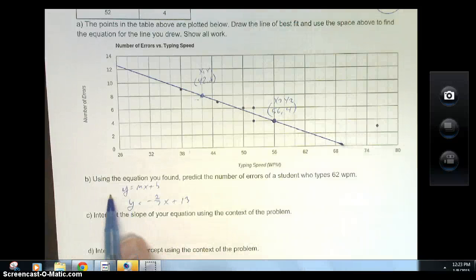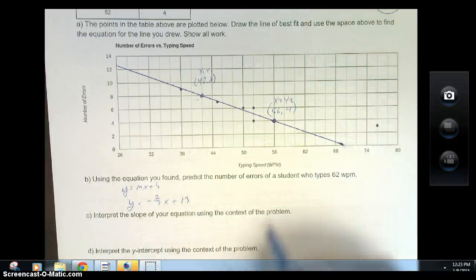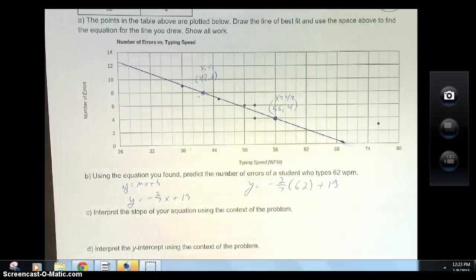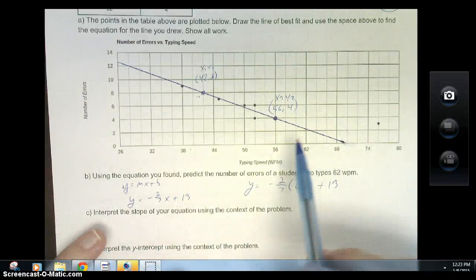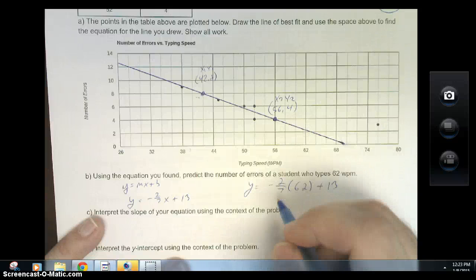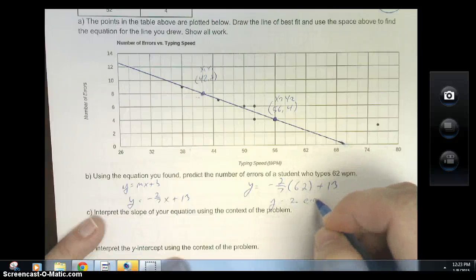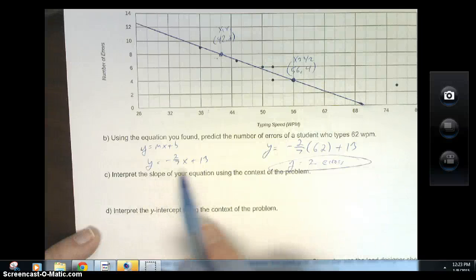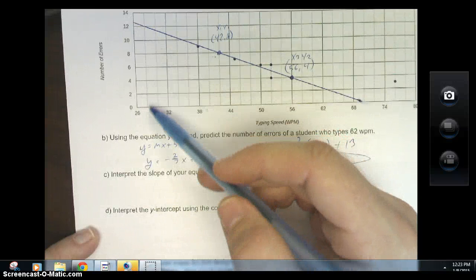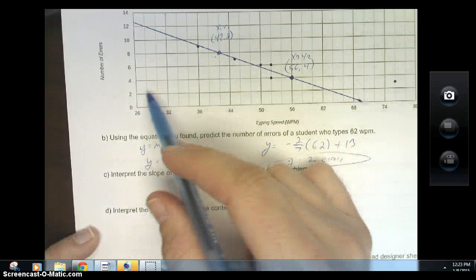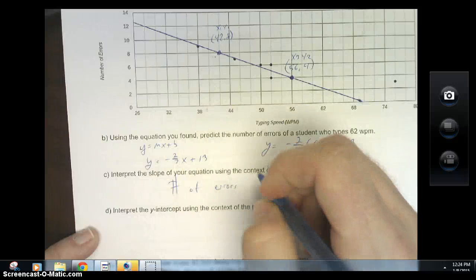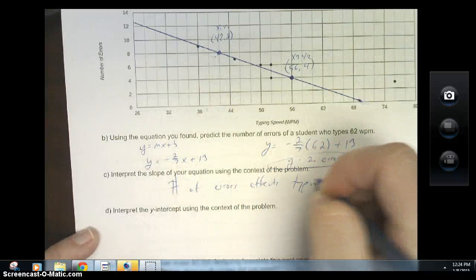Now using this equation you found, predict the number of errors. I would take this 62 and substitute it for x. Y equals negative 2/7 times 62 plus 13, and I would just use this value. Plug this stuff right in the calculator. I don't have one right now, they're at keystone. So I'm going to ballpark this and just say, based off my graph, it's a little bit above two errors. So two point something errors. I'm going to round to two errors. Interpret the slope of your equation in the context of the problem. Slope is as I'm typing faster, I'm making less mistakes. The slope is the rate of change of your speed compared to your errors, how number of errors affects typing speed.